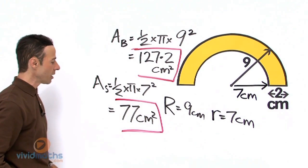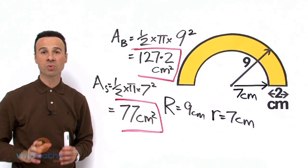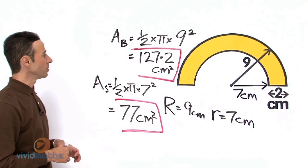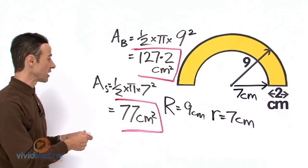Okay all we need to do now is area of big semicircle subtract the area of the small semicircle, so that is going to be 127.2 take away 77, let us write that up.